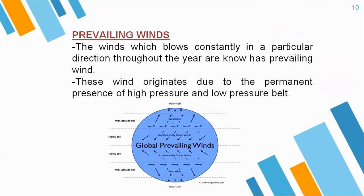Now let us learn about prevailing winds. Prevailing winds are those which blow constantly in a particular direction throughout the year — they don't change direction but keep on blowing in a particular direction all over the globe. Prevailing wind originates due to the permanent presence of high pressure and low pressure belts. High pressure is formed when the air is heated up, and low pressure is formed when the air is cooled. The air always moves from high pressure to low pressure. Here in this image you can see the direction of the wind blowing shown by arrows. These are your prevailing winds.